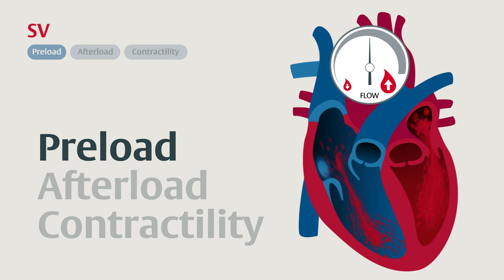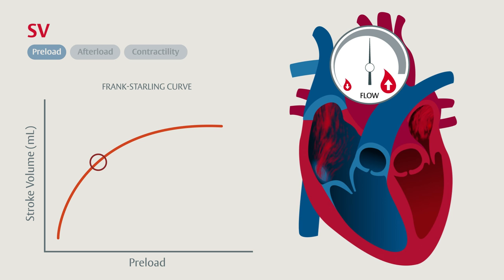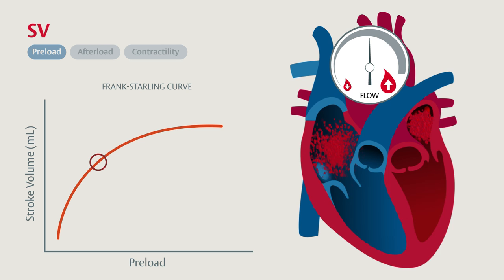Preload is the amount of stretch on the left ventricle prior to contraction. One important factor that contributes to that stretch is the volume inside the ventricle. The relationship between preload and stroke volume is called the Frank-Starling curve. The x-axis represents the preload — the volume in the ventricle at the end of diastole — and the y-axis represents the volume ejected by the left ventricle with each beat.